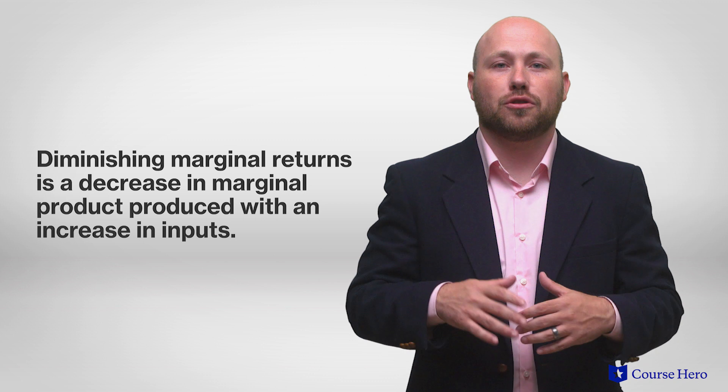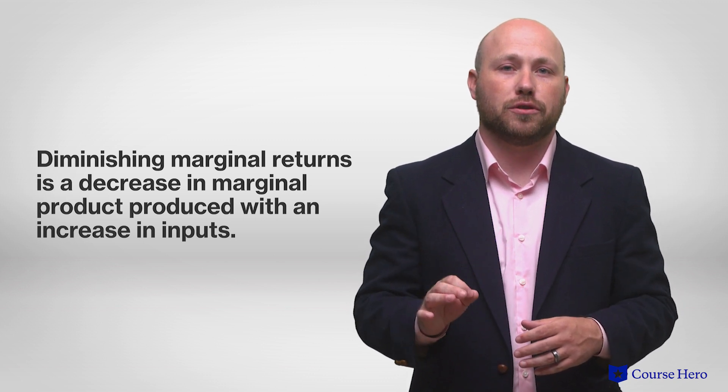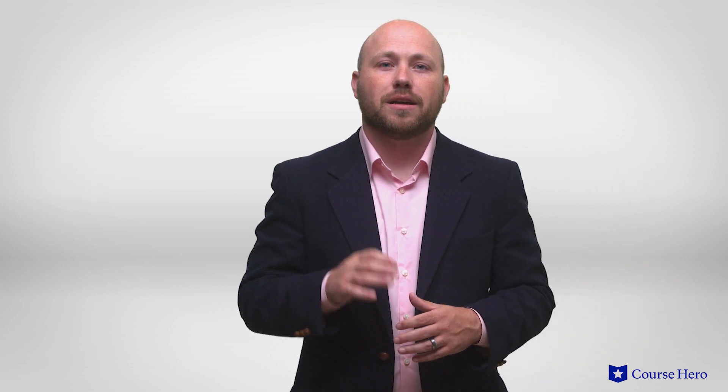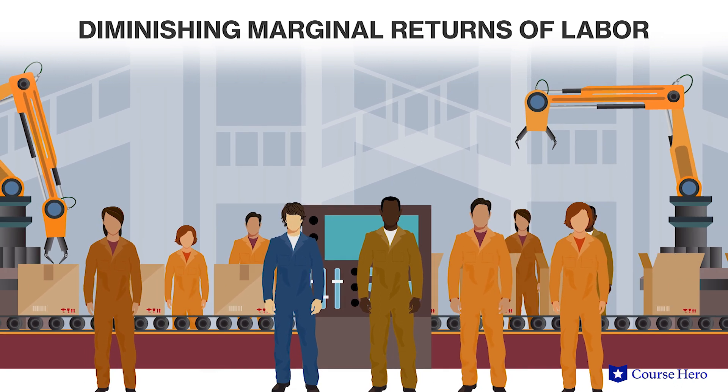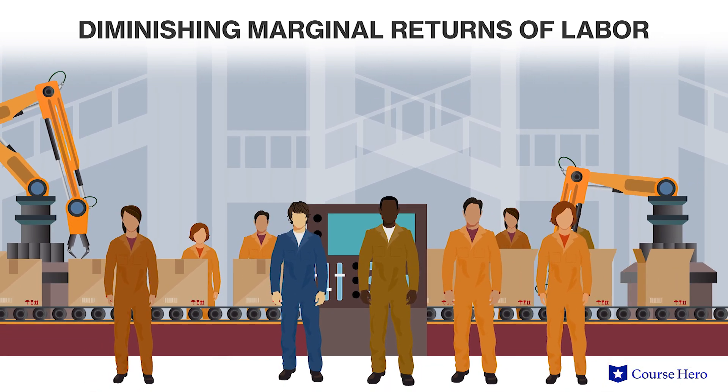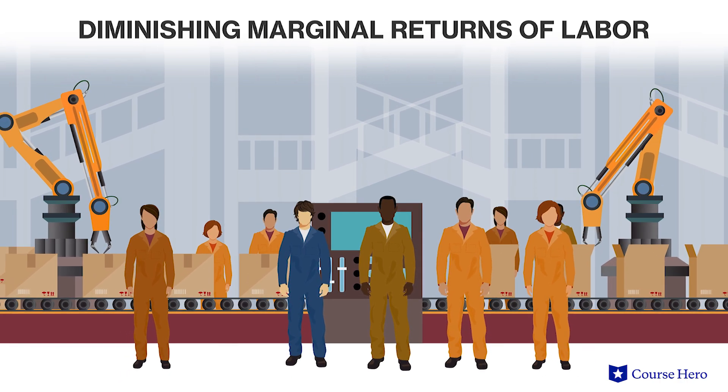At high levels of a particular variable input, using an additional input adds costs and reduces output, so a manager will maximize output by ceasing to use more of that input. This is an example of diminishing marginal returns, which is a decrease in marginal product produced with an increase in inputs. Diminishing marginal returns of labor would be the decreasing marginal product with an increase in the number of workers. For example, a factory creating plastics hires many new employees, which increases output, but then the factory becomes crowded and workers have trouble moving around each other, decreasing efficiency. Diminishing marginal returns is often described as the total output curve increasing at a decreasing rate.